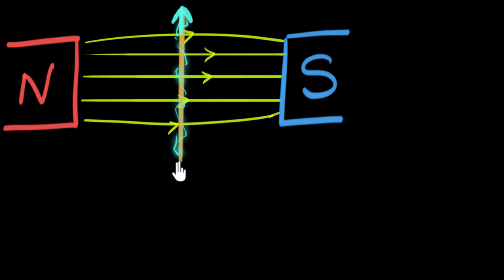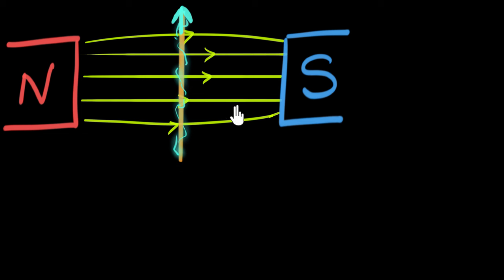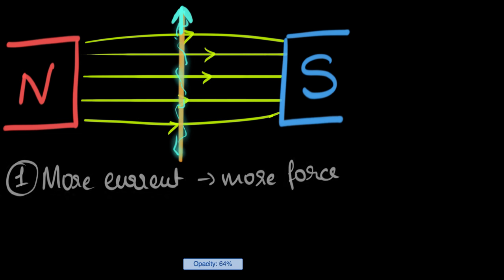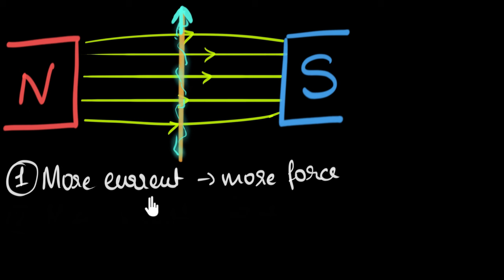The first thing people wanted to check is how does the force depend on the strength of the current. We know that a current carrying wire is sort of acting like a magnet, and that's why it's being affected by the magnetic field. If you increase the current, it'll become like a stronger magnet, so you would expect the force to increase. And that's exactly what we found. Result number one: if you put more current through the wire, it will experience more force. If you decrease the current, the force will decrease. If you make the current zero, the force will vanish.